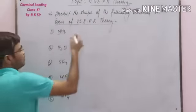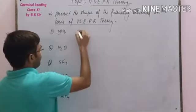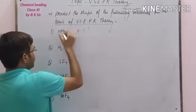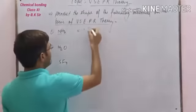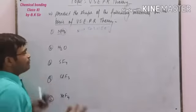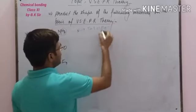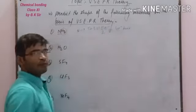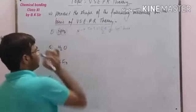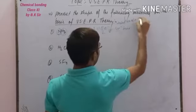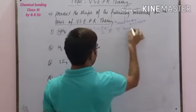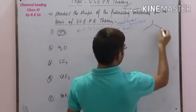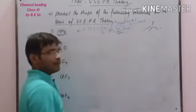In NH₃, the central atom is nitrogen. In the valence shell of nitrogen there are 5 electrons, and there are 3 electrons shared with 3 hydrogen atoms. So the total number of electrons will be 8 electrons. When we pair these electrons, the total number of pairs is 8 divided by 2, which gives 4 electron pairs. Due to these 4 electron pairs, the geometry of the molecule should be tetrahedral.